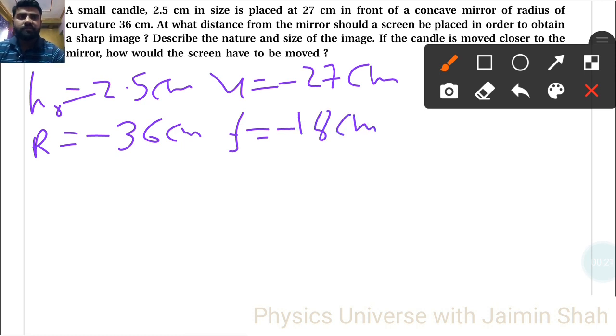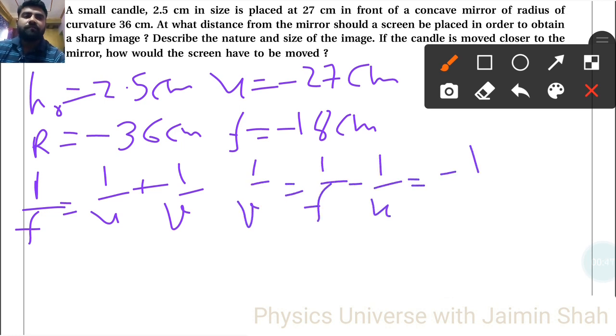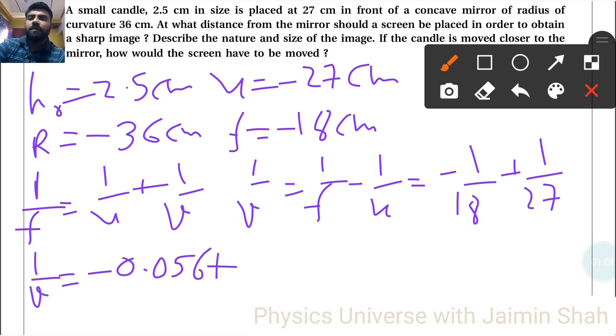At what distance from the mirror should a screen be placed in order to obtain a sharp image? Using the formula 1 upon F is equal to 1 upon U plus 1 upon V, we get 1 upon V is equal to 1 upon F minus 1 upon U. So minus 1 upon 18 minus minus becomes positive 1 upon 27. So 1 upon V is equal to minus 1 upon 18 plus 1 upon 27.